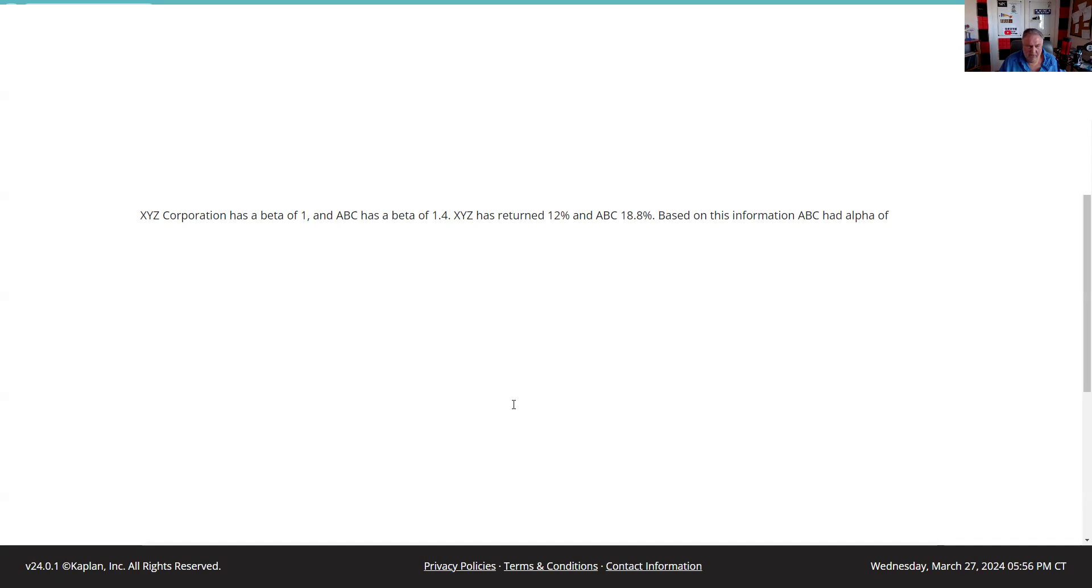ABC's alpha? Alpha is excess return over beta. Beta is the volatility as compared to the market. Market's S&P 500. So here it says XYZ has a beta of 1, and so that means when XYZ has returned 12%, that is the market return.